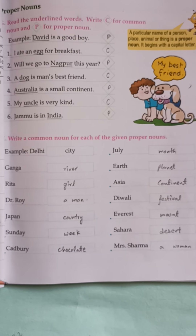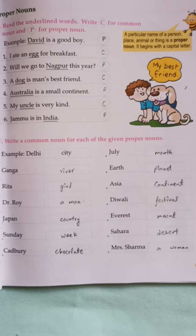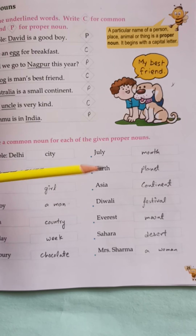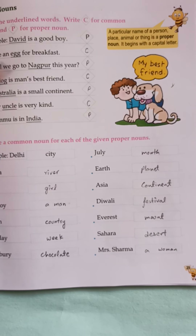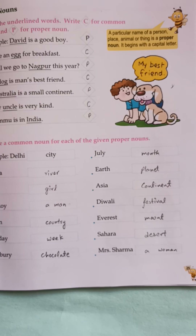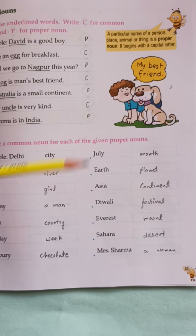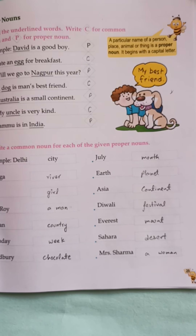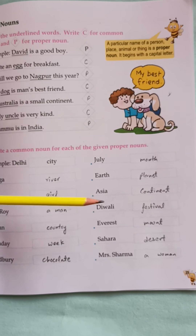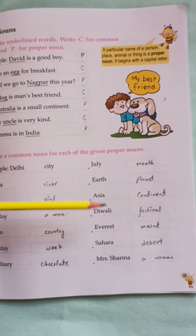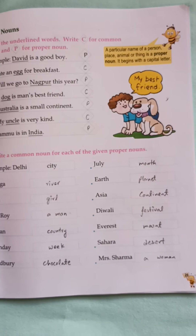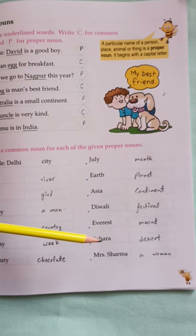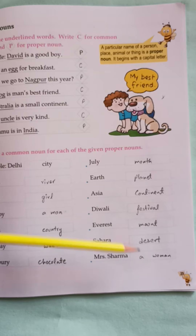Cadbury — we will say chocolate is the common noun. July → month. Planet → planet. Asia → continent. Asia is a proper noun; continent is the common noun. Festival is one festival. Month, a woman.